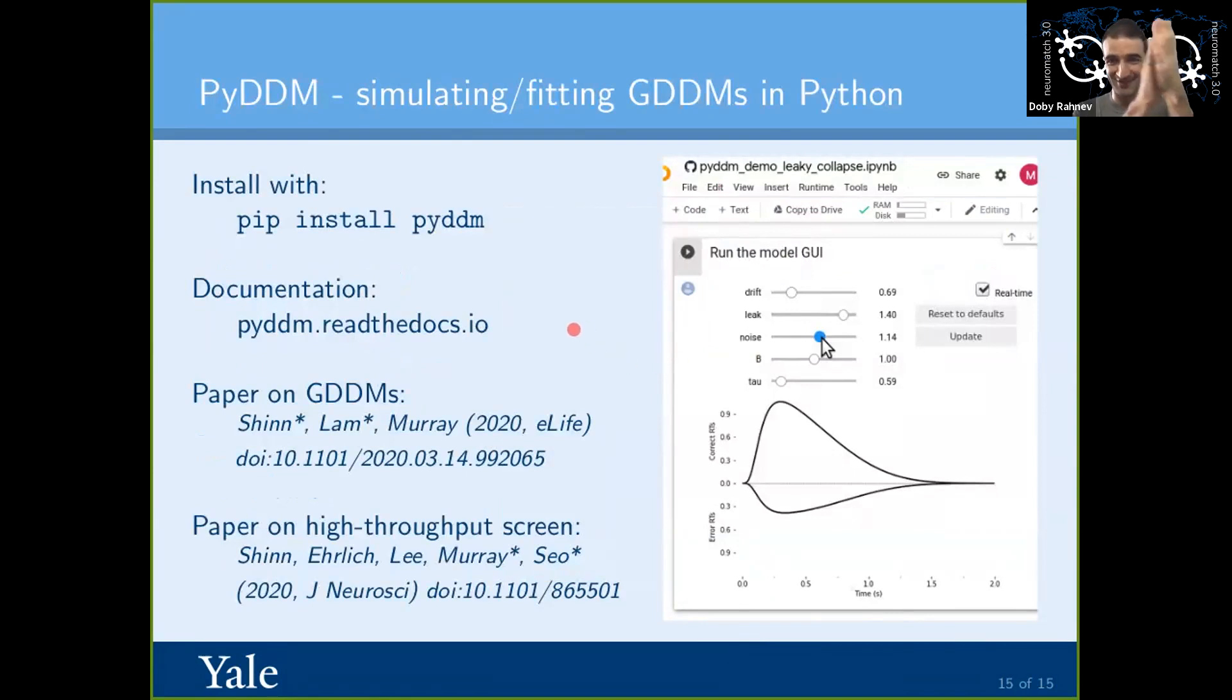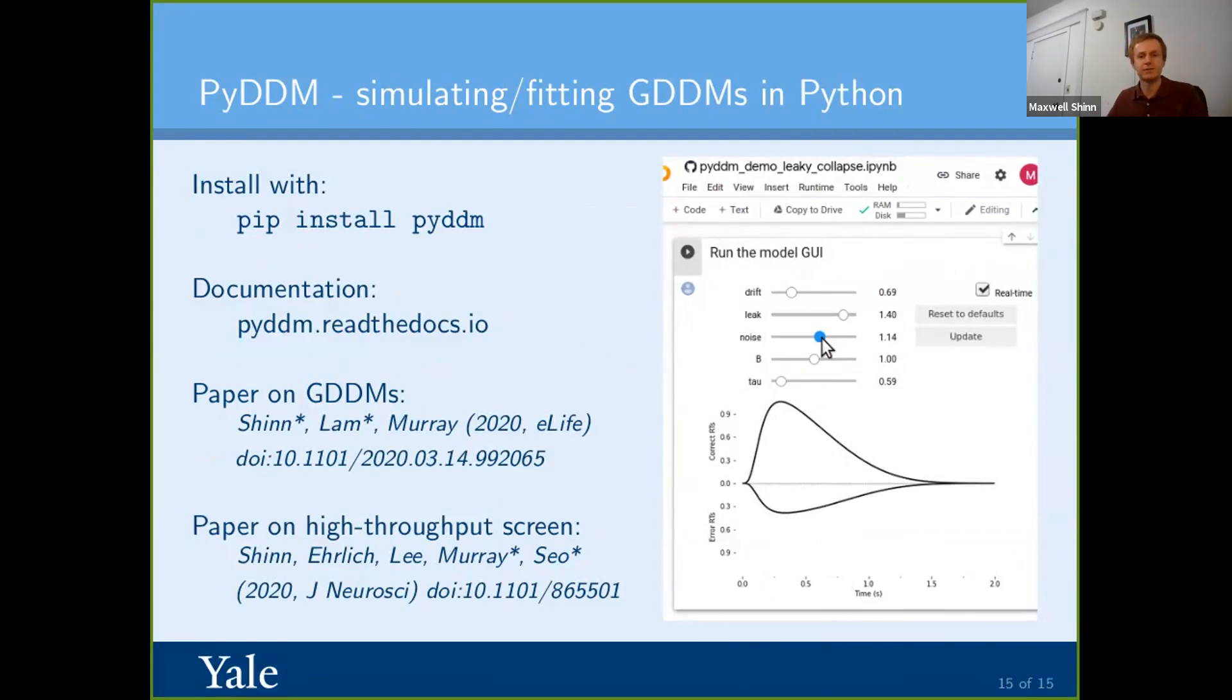And I'd be happy to take any questions. Thank you so much. This is our package, by the way. So here's the install it there, documentation. These are the two papers. And this is the model. This is one of the two graphical user interfaces we have for the package. So you just specify your model, and then you can move these sliders around to play with your model, and see what the response time distribution looks like. So this is the one with Jupyter, but we have another one, too. But yeah, I'd be happy to take any questions.